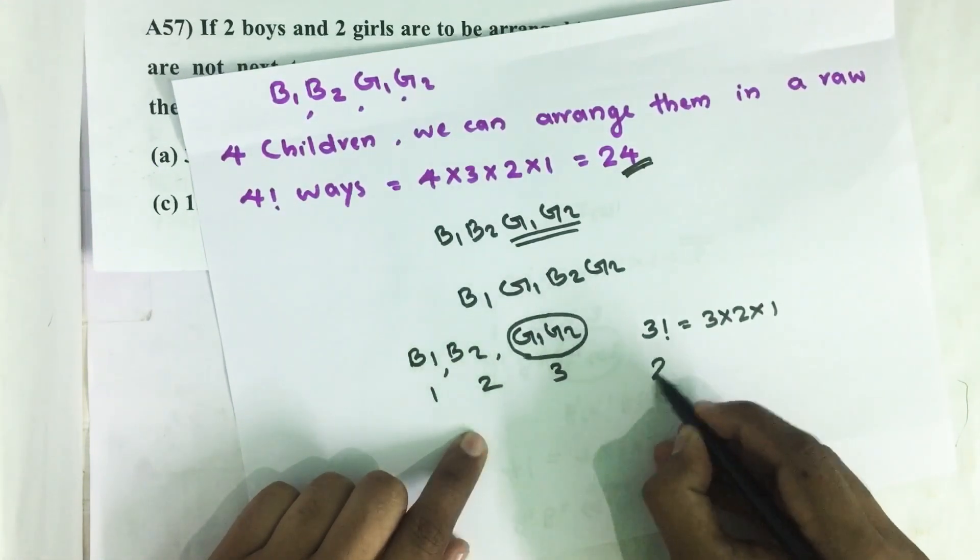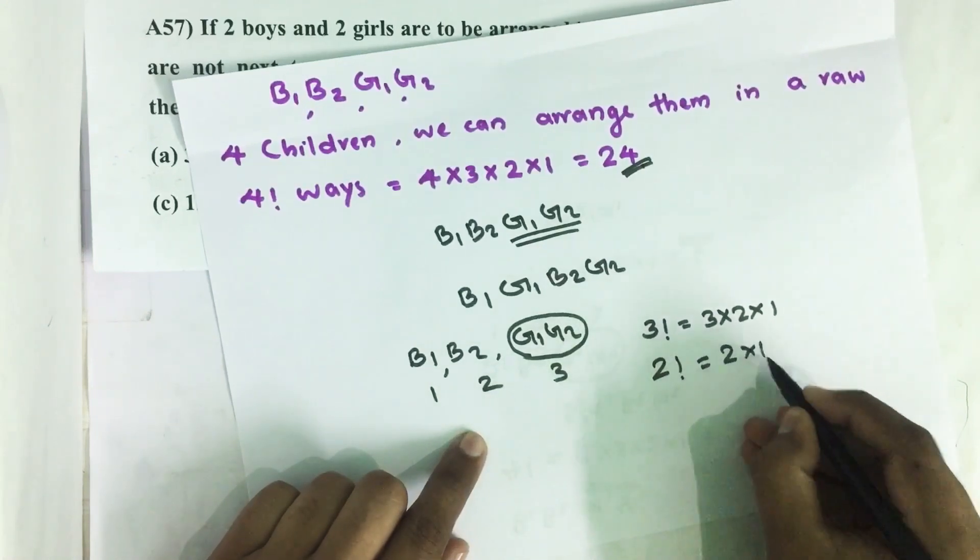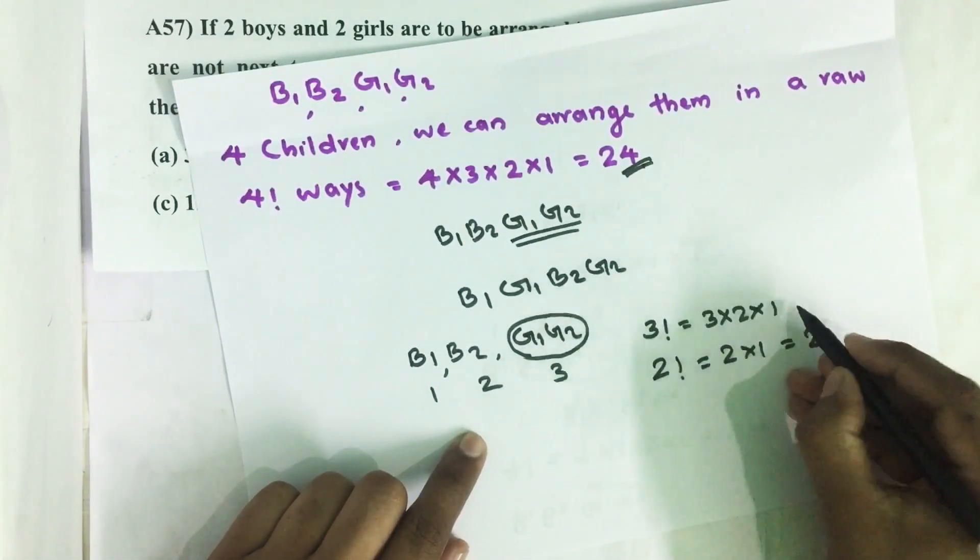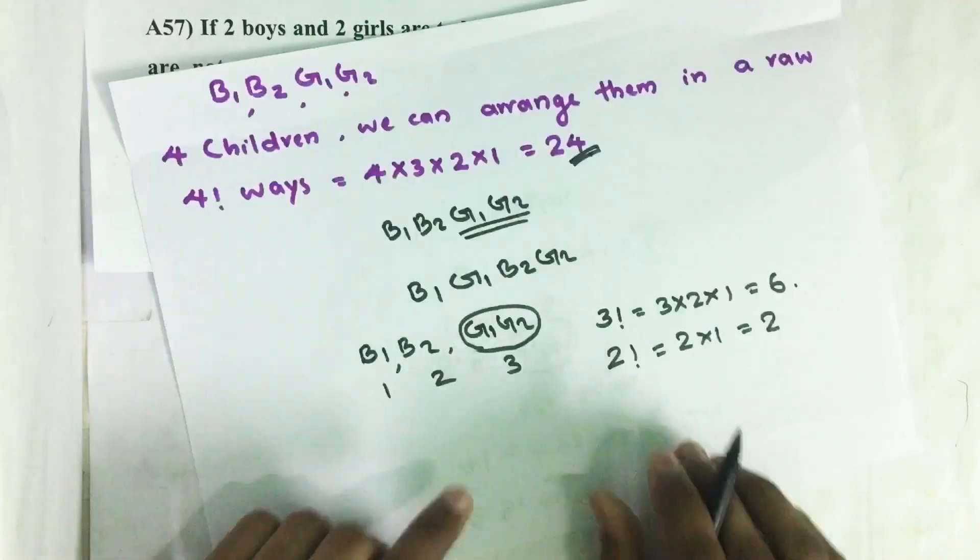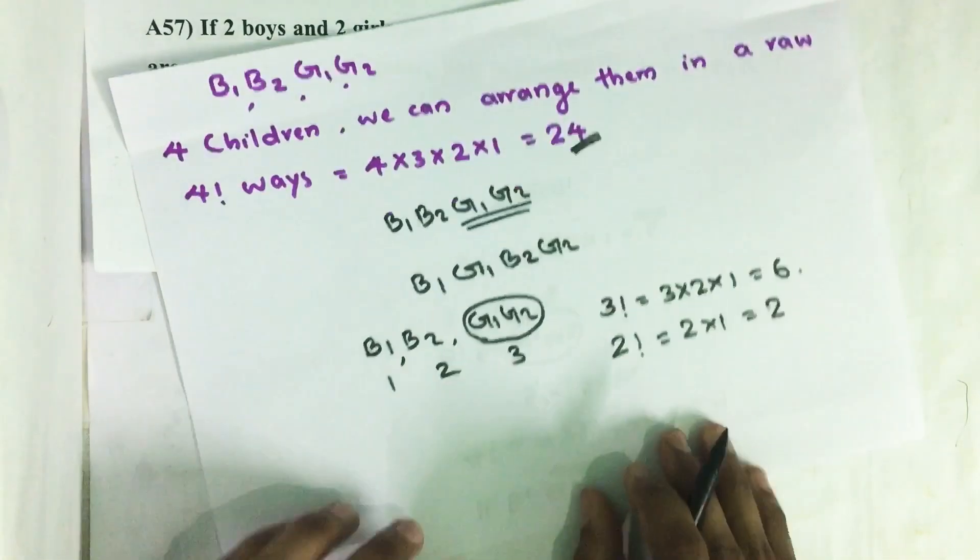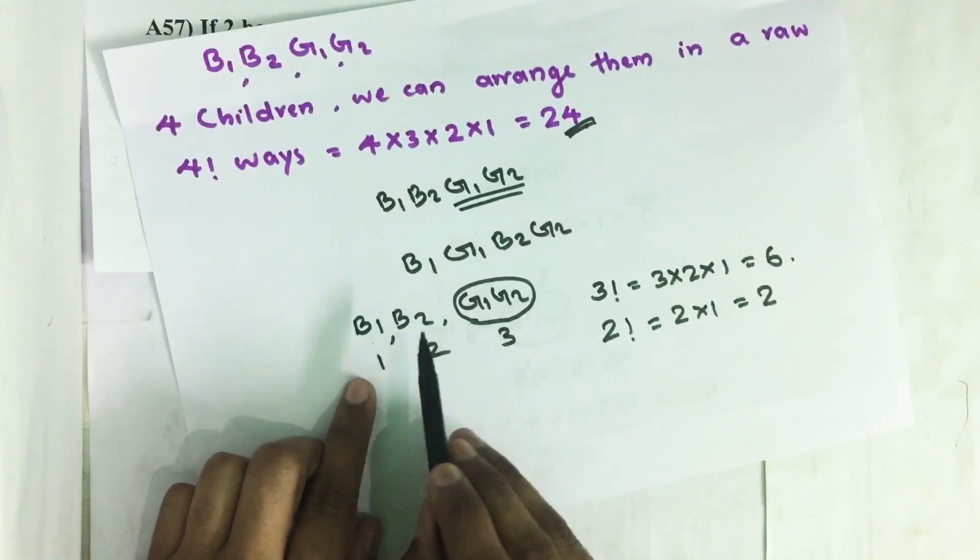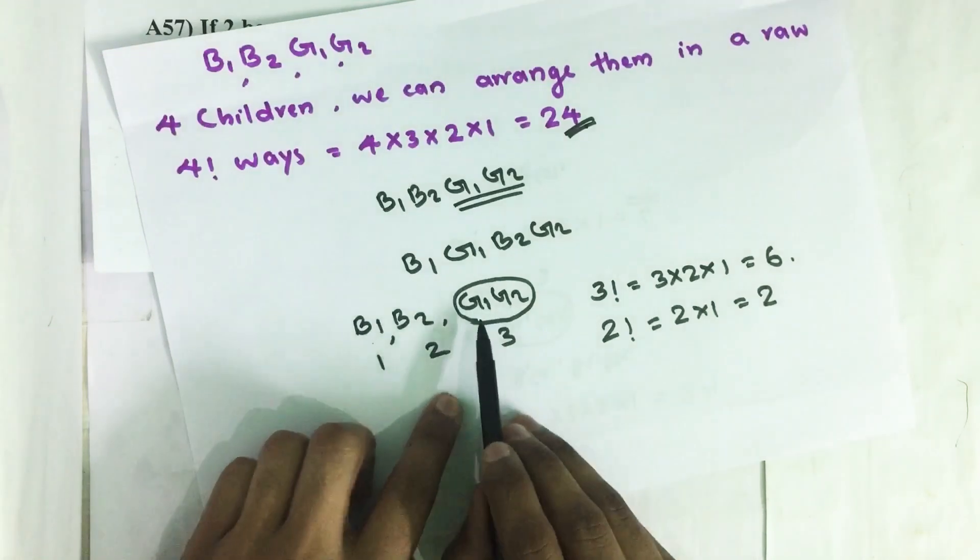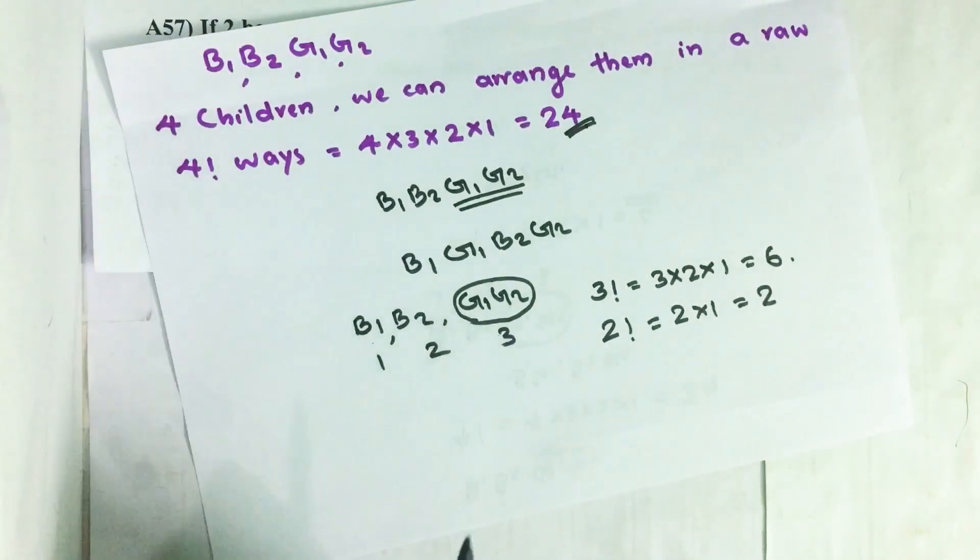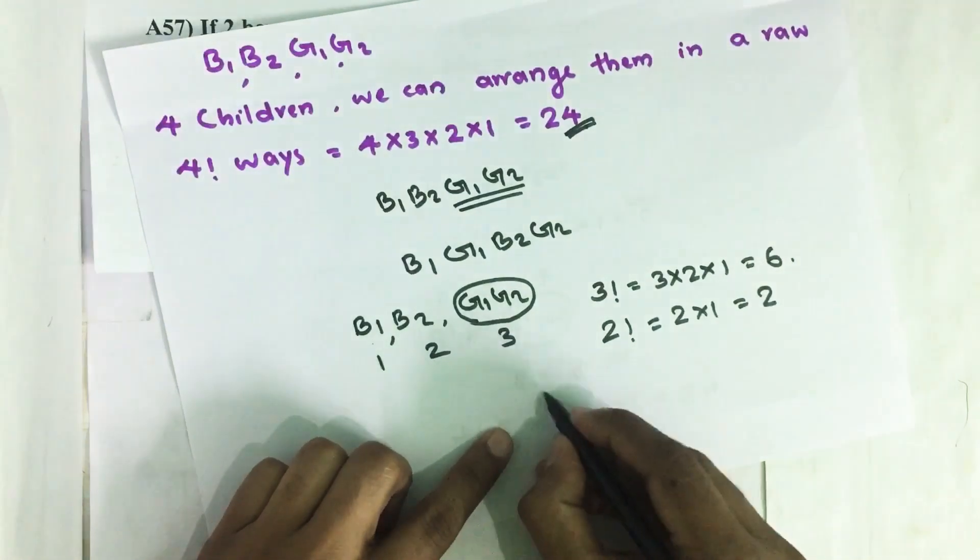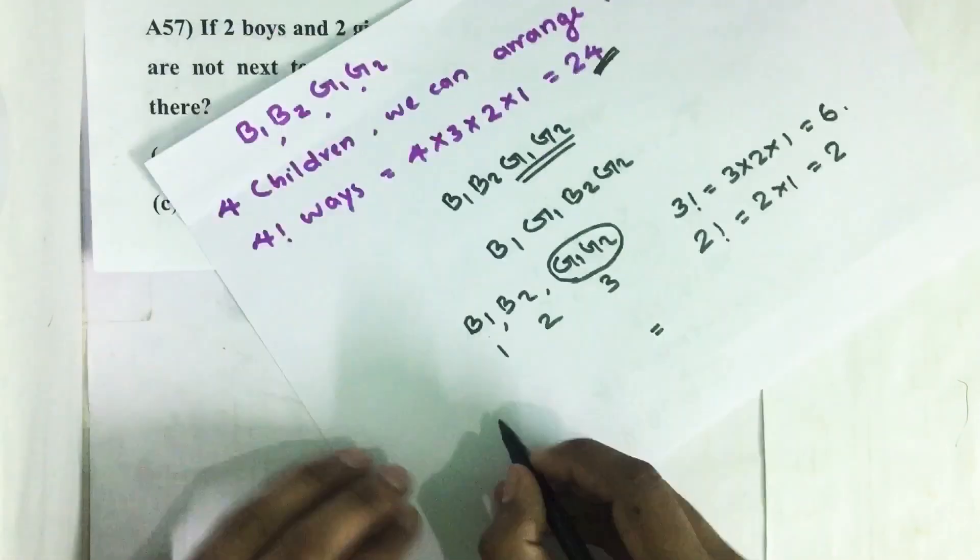But inside this circle G1, G2, we can arrange in 2 factorial ways, that is 2 times 1, which is equal to 2. This is 6. Therefore, total number of ways we can arrange B1, B2 and G1, G2 together is...